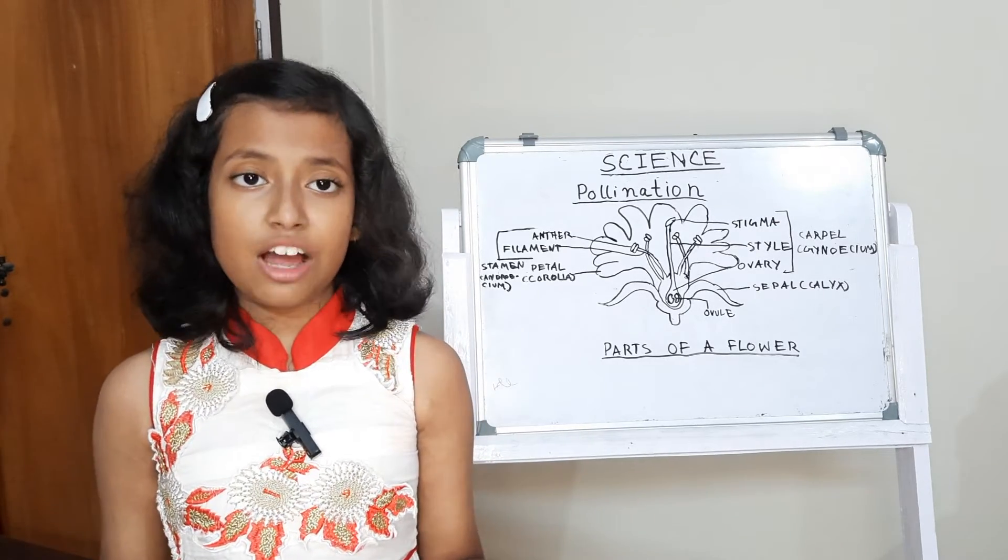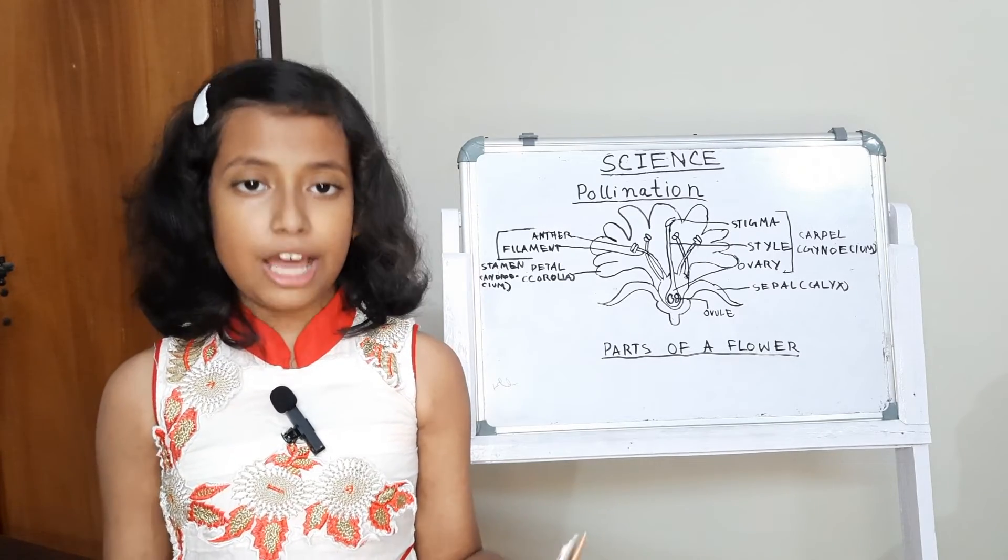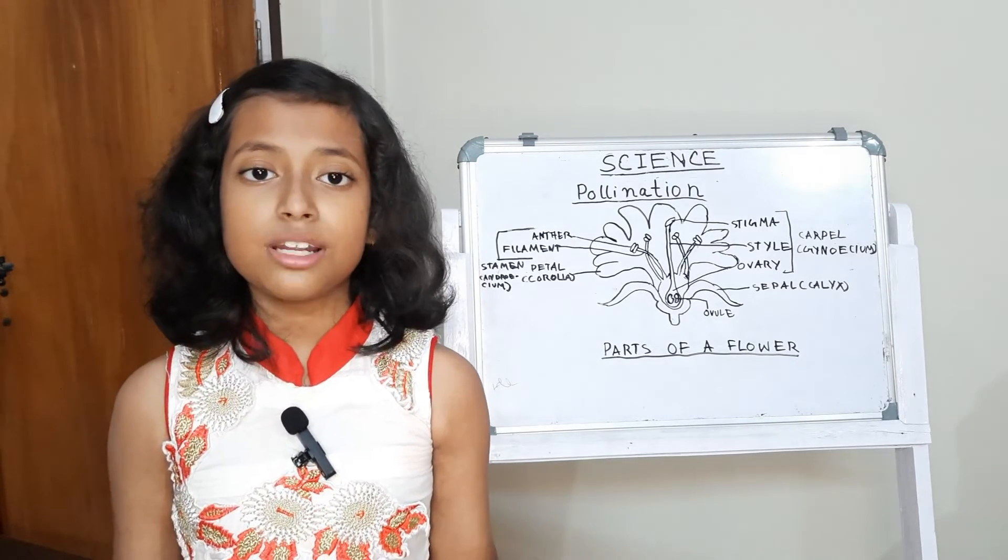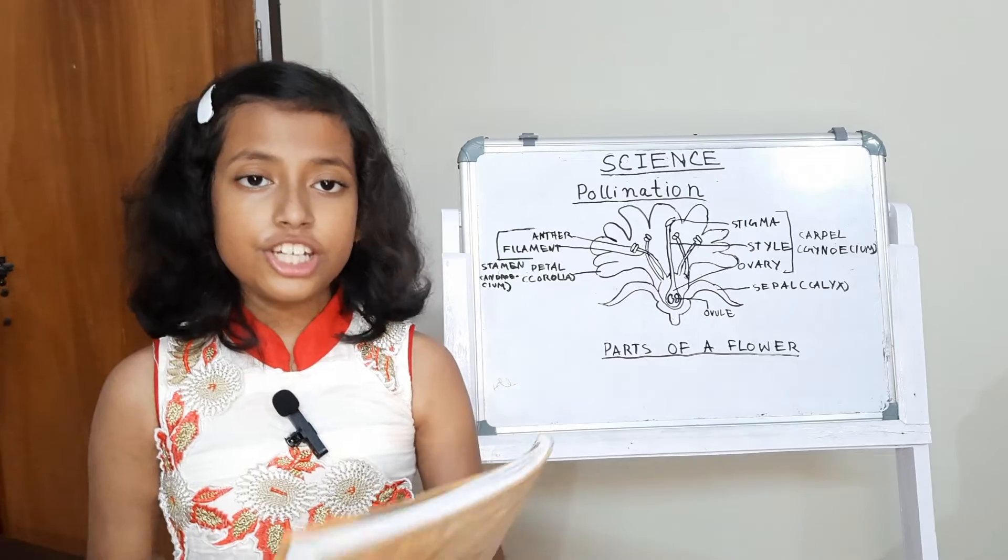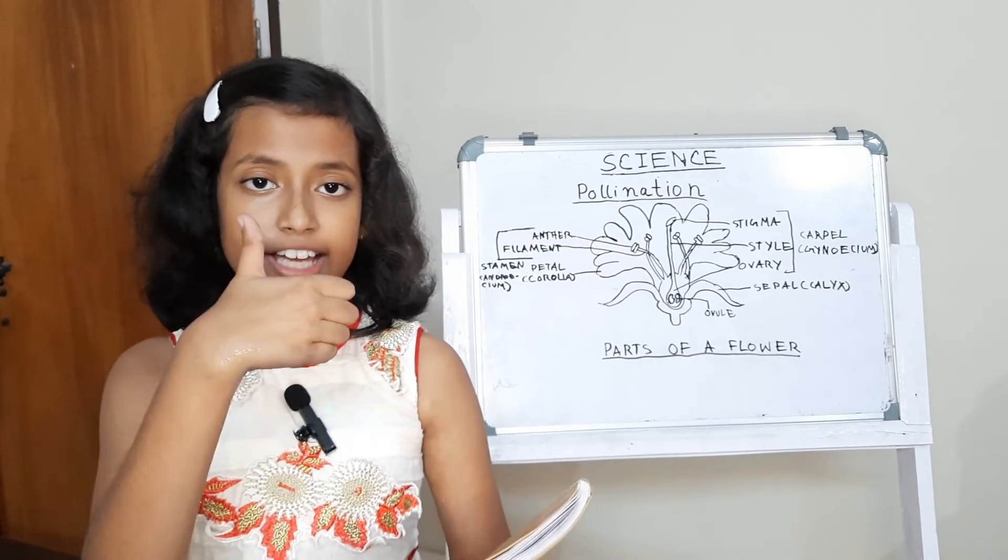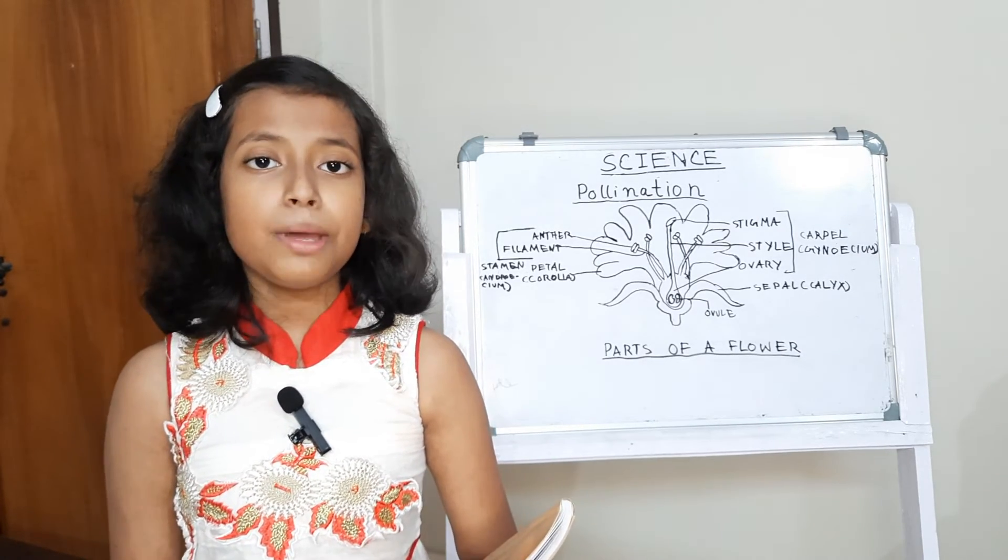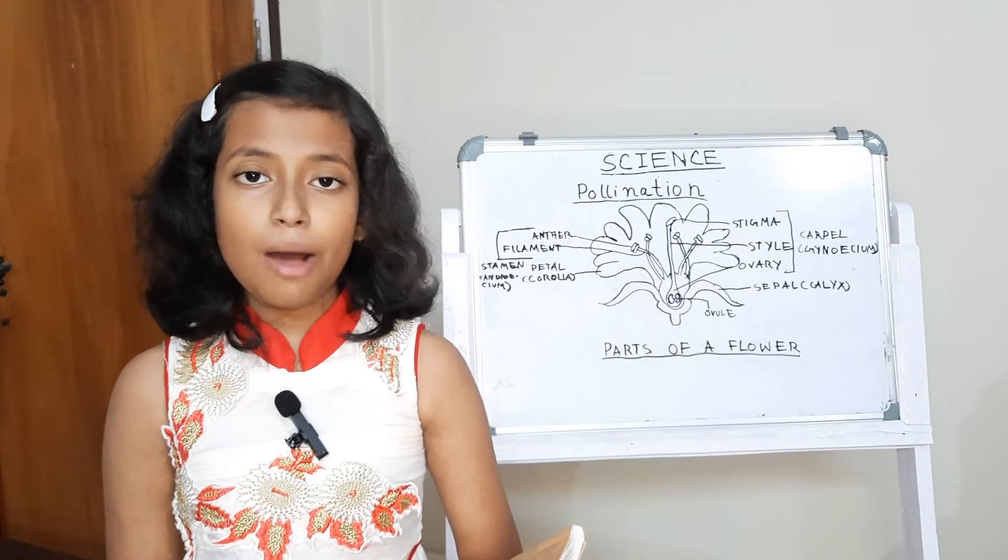Friends, today we have discussed the four different parts of a flower, about bisexual and monosexual flowers and about pollination. Today I am ending my topic here. If you like my video, please like, share and subscribe my channel. Very soon I will be back with my new topics. Bye friends!